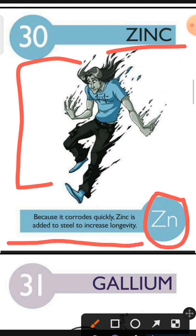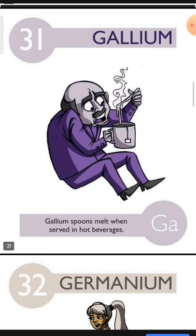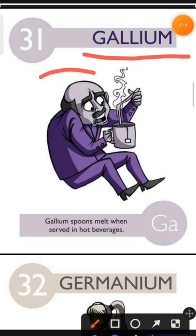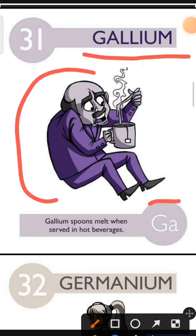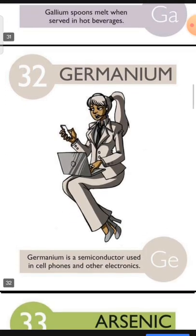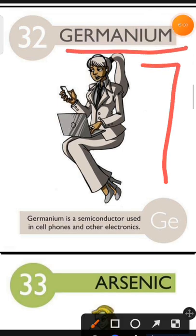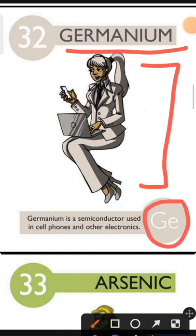Element number 31 is Gallium. The characteristic of Gallium is: Gallium spoons melt when served in hot beverages. Element number 32 is Germanium. The characteristic of Germanium is: Germanium is a semiconductor used in cell phones and other electronics.